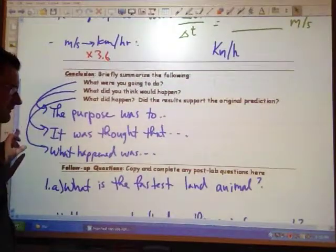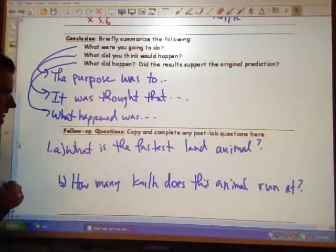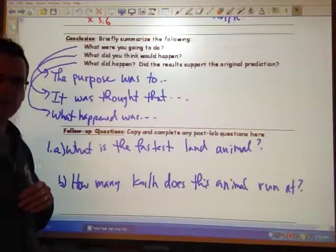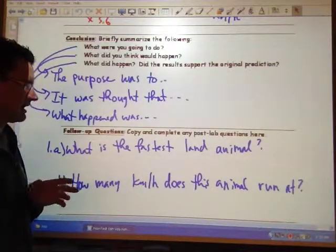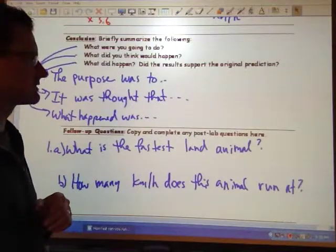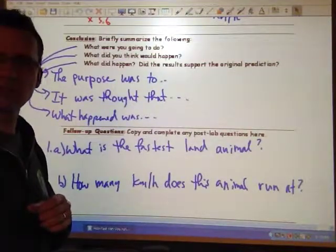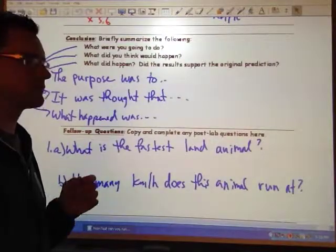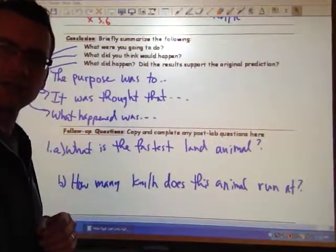Then a couple of easy follow-up questions here. All I want you to do is tell me: 1a, what is the fastest land animal? And then b, how many kilometers per hour does that animal run at? So relatively straightforward. Simply, the only thing you're going to be measuring is time, and then using the formula there to calculate your speed. Thank you.